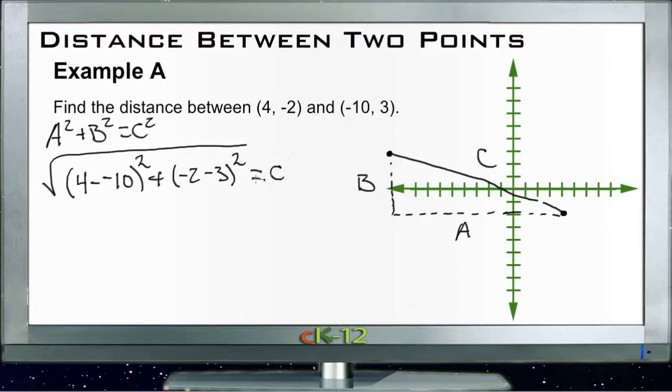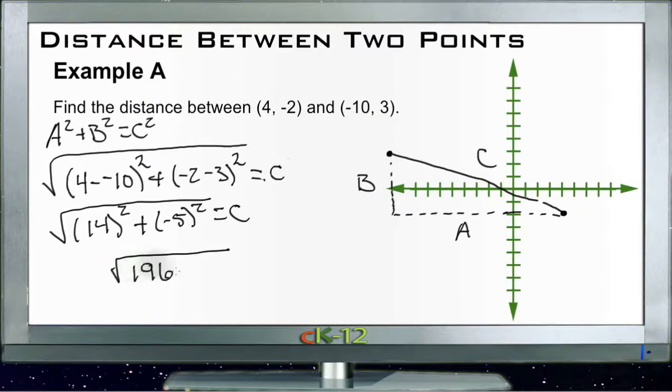Now we'll take 4 minus -10 squared, that's 14², and we'll add that to -5² and then we'll take the square root of that to give us c. Well, 14² is 196, so we're going to have the square root of 196 plus 25, which is 221.